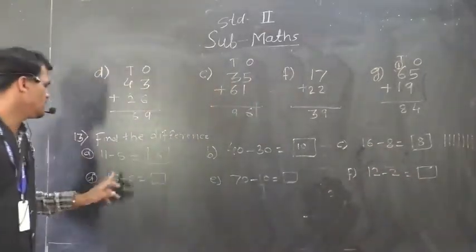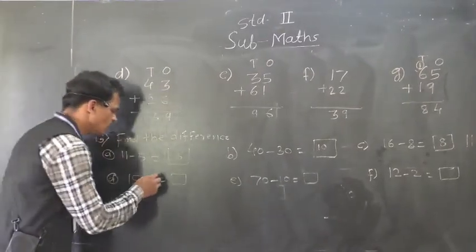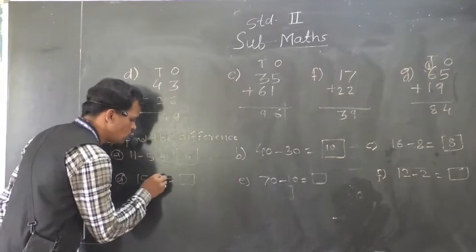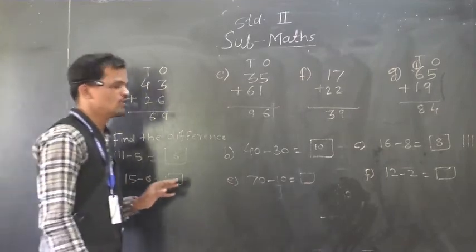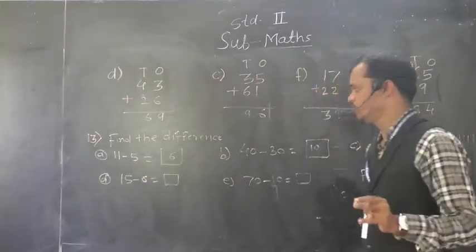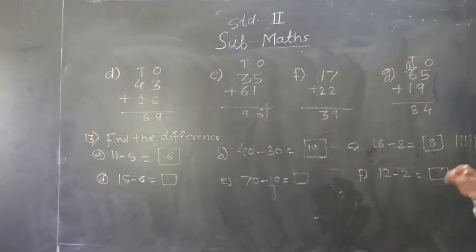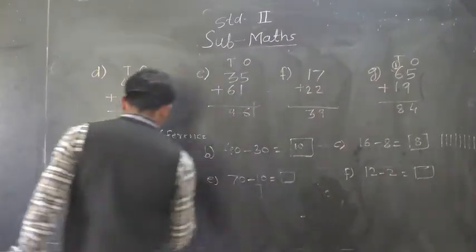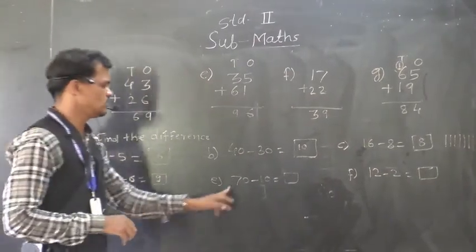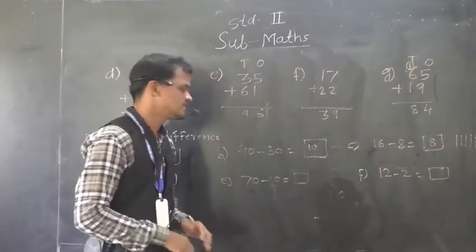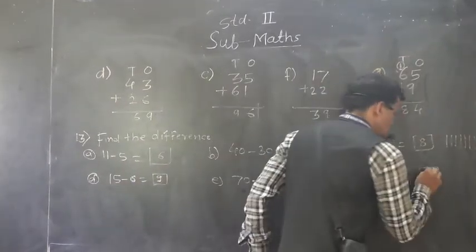Next example, 15 minus 6. So, by using counting backwards, you can draw answer. 15 minus 6. So, before 15, 14, 13, 12, 11, 10, 9. So, 9 is the difference between 15 and 6. Now, 70 minus 10, 16. And, 12 minus 2, 10.